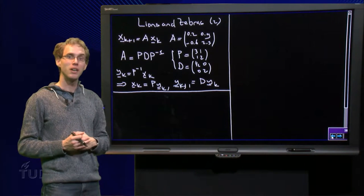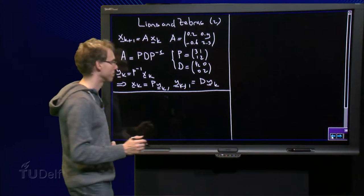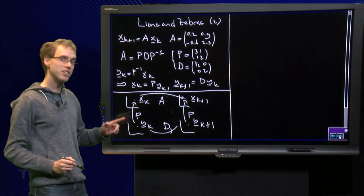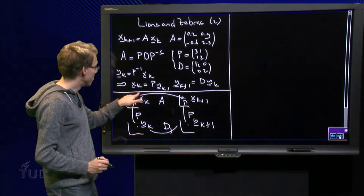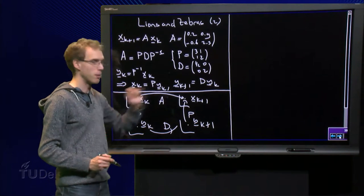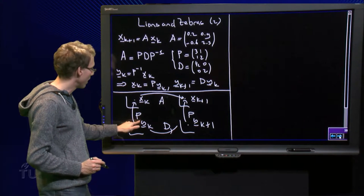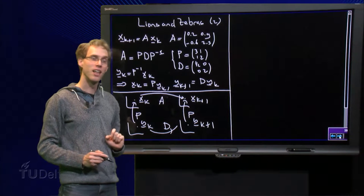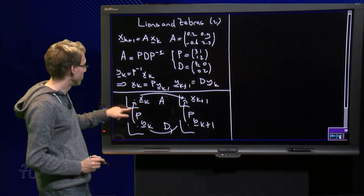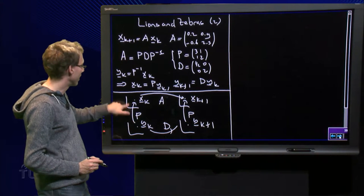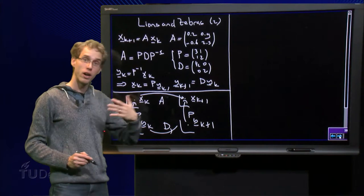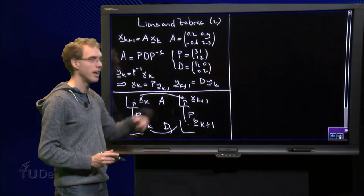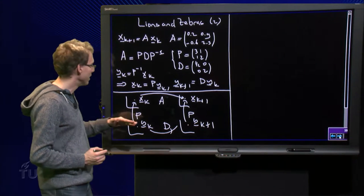So, how does it look in a commutative diagram? Then we see that A maps x_k to x_k+1, y_k is mapped to y_k+1 by matrix D. And furthermore, we see that the matrix P maps y_k to x_k and the same matrix P maps y_k+1 to x_k+1.